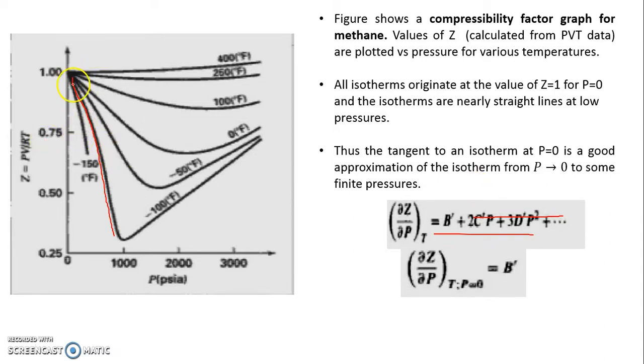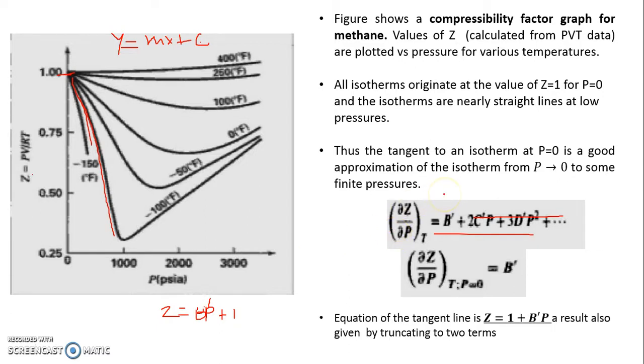The slope of the line z as a function of p is nothing but b dash. This is the equation of this line, which is y equals mx plus c. What is c? C is 1. What is y? Y is z. What is x? X is p. And what is the slope? The slope is b dash. You can say that the line which is representing this has an equation z equals 1 plus b dash p, which is nothing but the virial equation up to the second term. Hence for all practical purposes, at any given temperature up to some pressure, you can represent the virial equation of state with single term - that is z equals 1 plus b dash p - and you do not need to go for higher order terms.